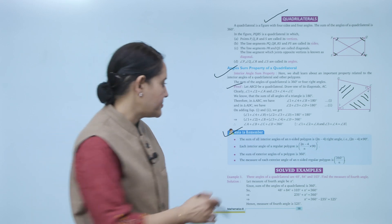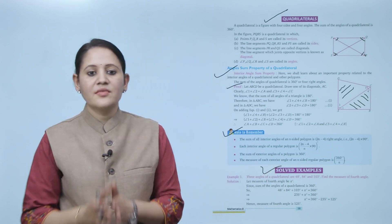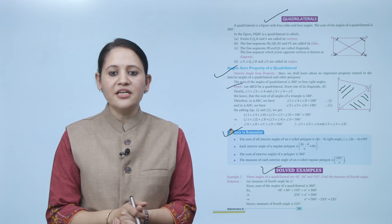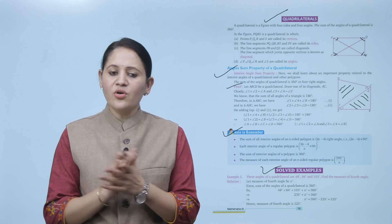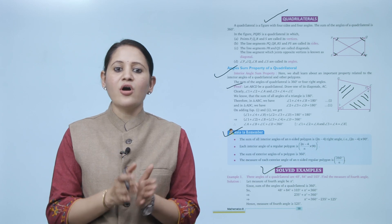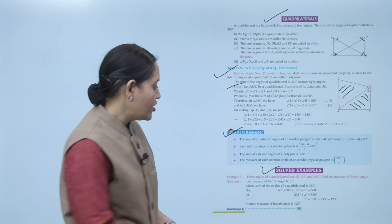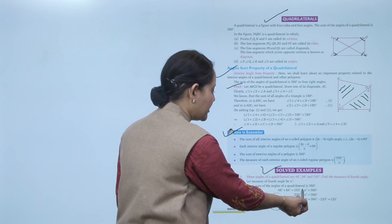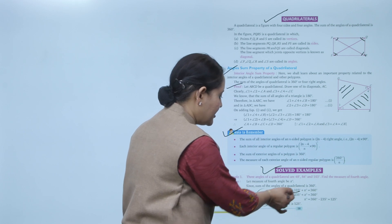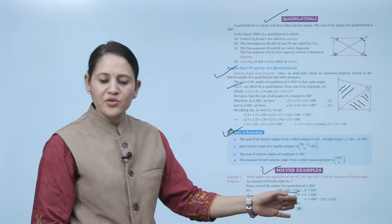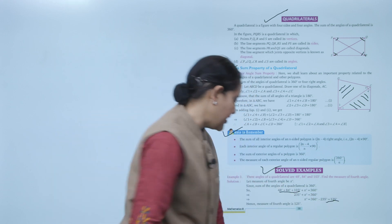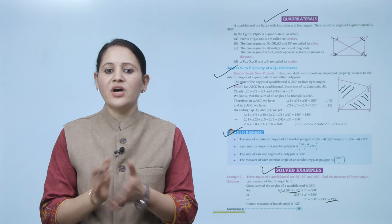Solved example: three angles of a quadrilateral are 48 degrees, 84 degrees, and 103 degrees. Find the measure of the fourth angle. Let the measure of the fourth angle be X degrees. Since the sum of angles of a quadrilateral is 360 degrees: 48 + 84 + 103 + X = 360. The sum of the three angles is 235, so X = 360 − 235 = 125 degrees. Hence, the measure of the fourth angle is 125 degrees.